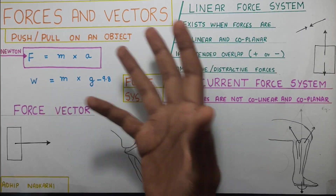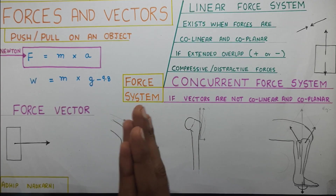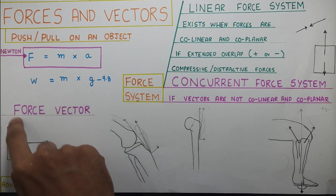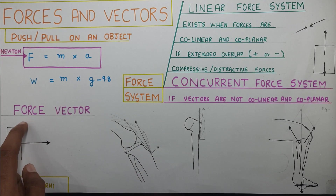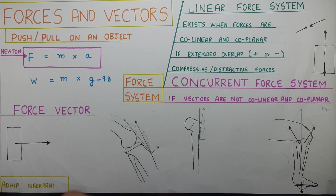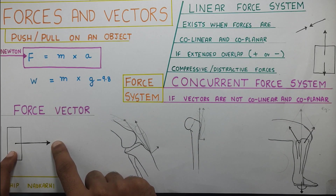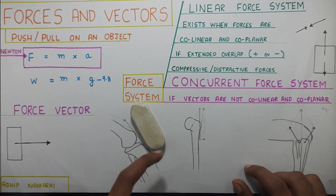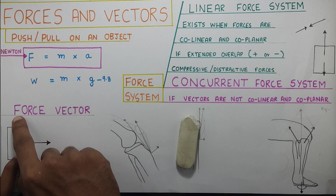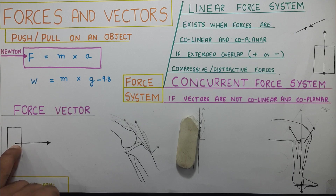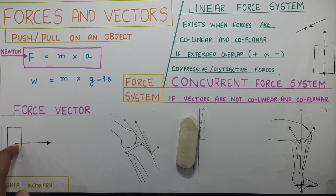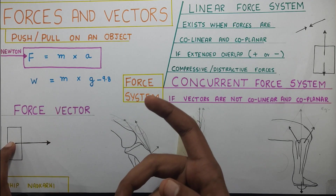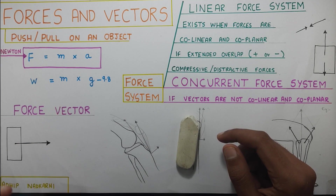Now let's see how vectors and forces are related. A vector basically gives direction to a quantity. A force vector, when we denote it, tells us three things. First, where the force is being applied — the point of start is where the force is applied on the object. Second, the length of the arrow tells us how much force is being applied — greater the magnitude, longer the arrow. And third, the direction of the force.